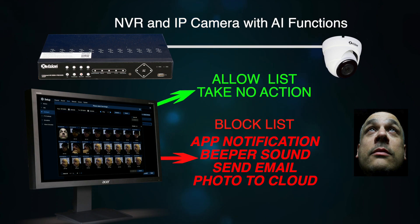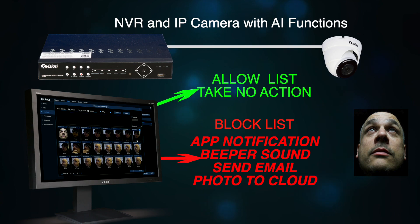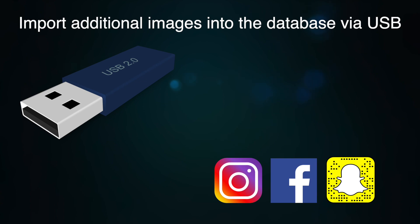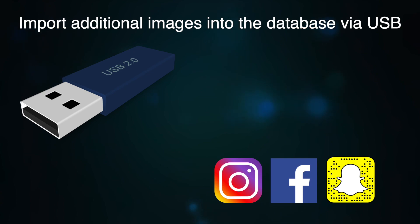The images in the database don't have to be taken by the IP camera itself, so it might be someone you don't see and wouldn't have their photo on your camera. You can manually import photos into the database — perhaps taken from their social media sites or any other online post with their face on. You can add that to the database via a USB stick and then import it in.